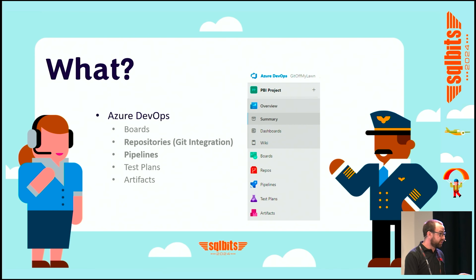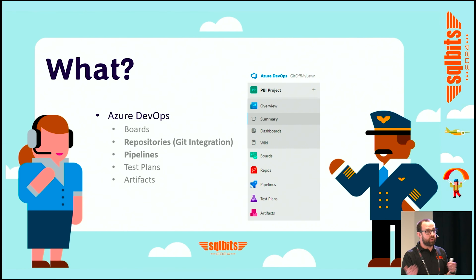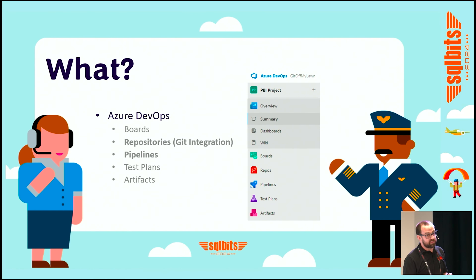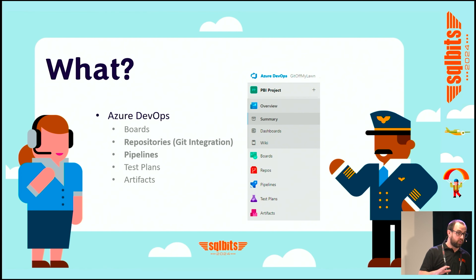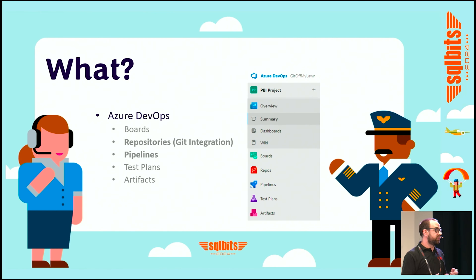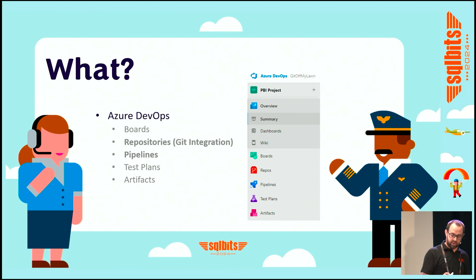It allows us to do things like version control within the repository. So that scenario we talked around previously — where we've deployed to production and done something we need to roll back or apply a fix — we can do that with version control within the repository. We can touch on things like monitoring and testing, and we've got some demos and scenarios we'll cover later on. And then collaboration and governance, coming back to those key issues I identified on the first slide.